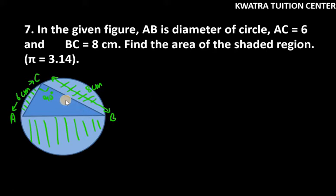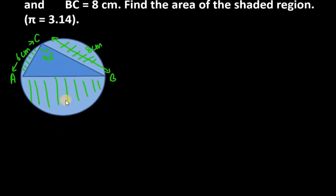So therefore, we can apply Pythagoras theorem to triangle ACB. So in this case, base is 6 cm, perpendicular is 8 cm, we need to find hypotenuse.